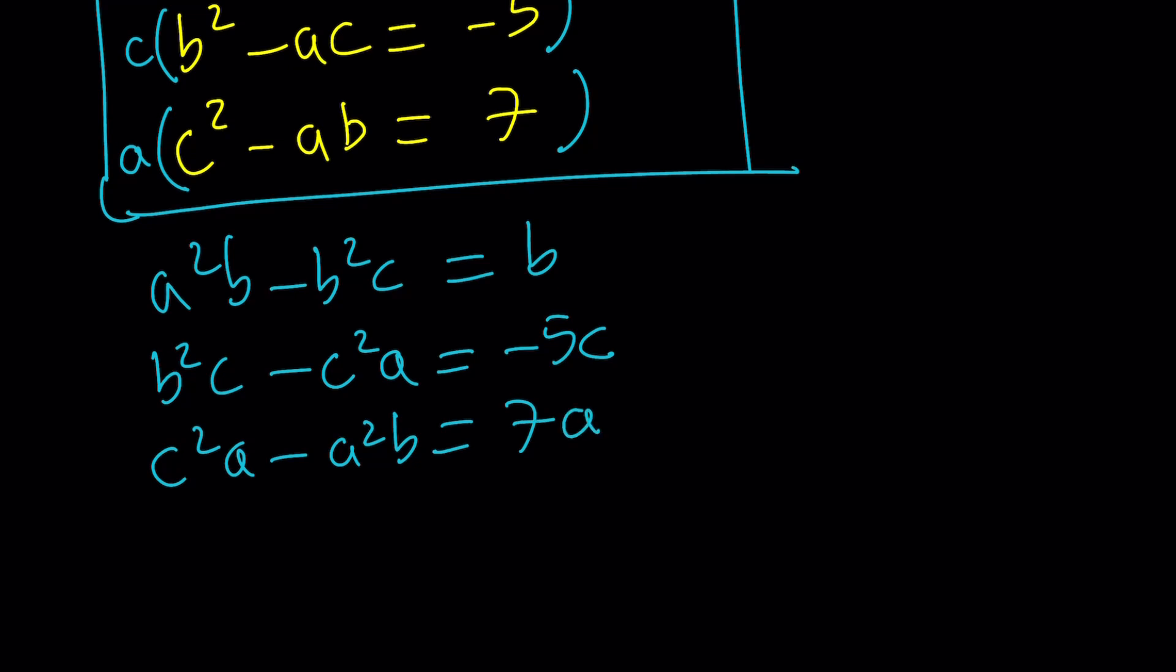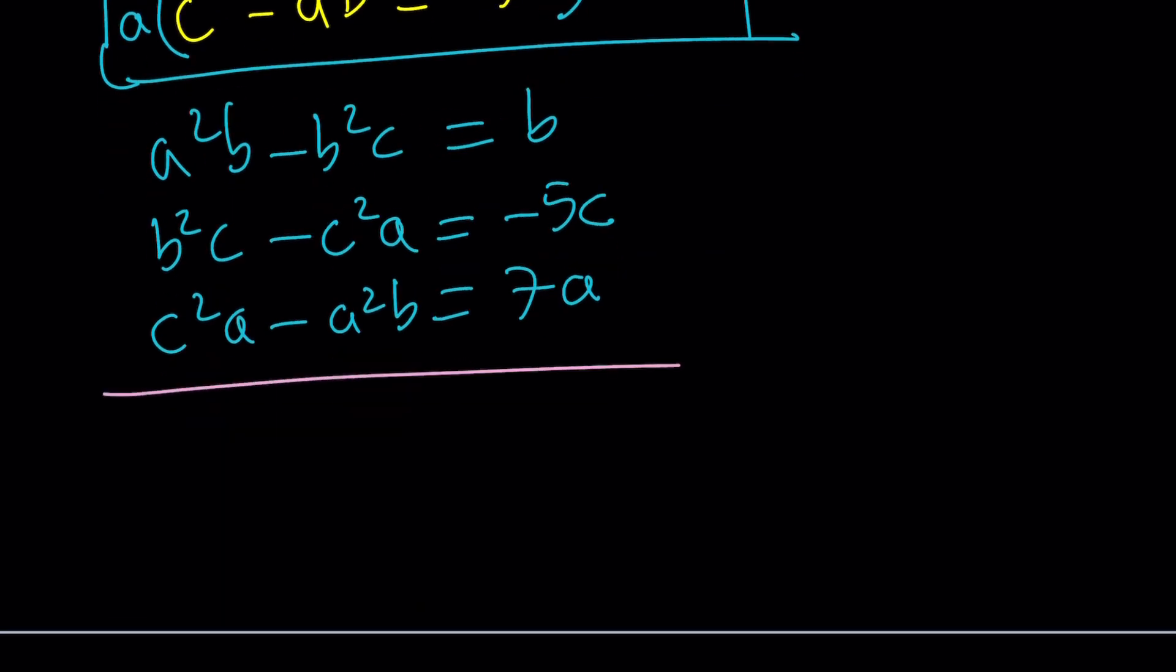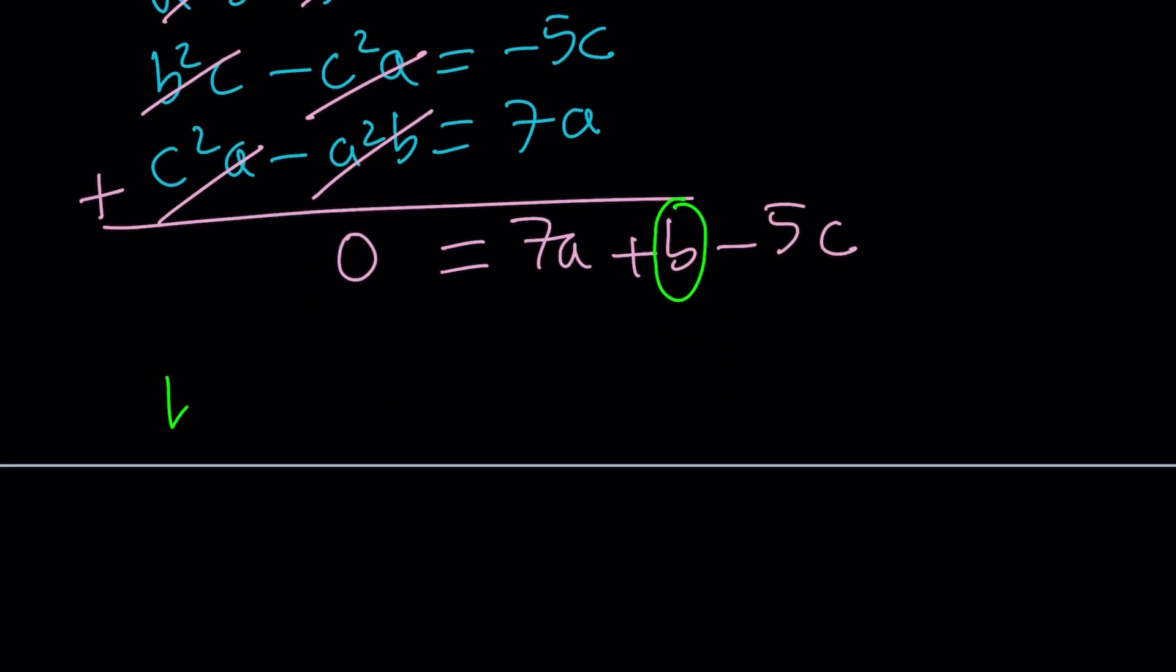Now here's what happens, and that's just awesome. When you add these equations, a squared b cancels out, b squared c cancels out, c squared a cancels out, everything cancels out, and we end up with zero. On the right-hand side, we get 7a plus b minus 5c. This is nice because we were able to get rid of the quadratics, and we got a really nice relationship among a, b, c. Now, we can go ahead and isolate one of the variables. b is a good candidate. So b can be written as 5c minus 7a.